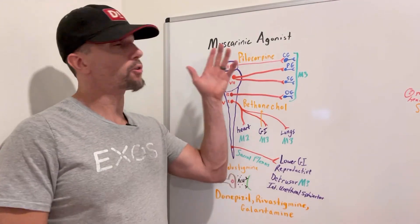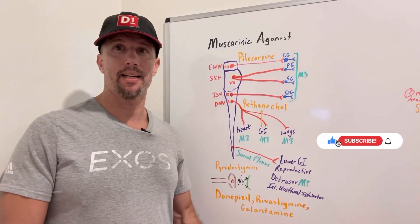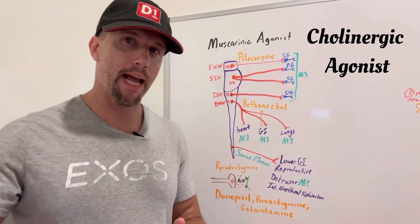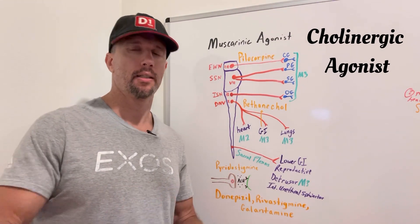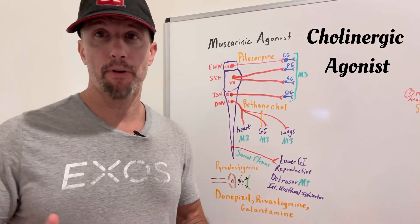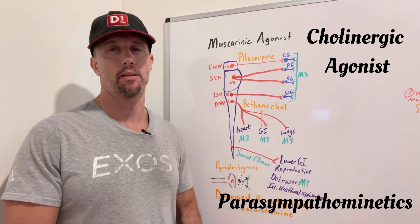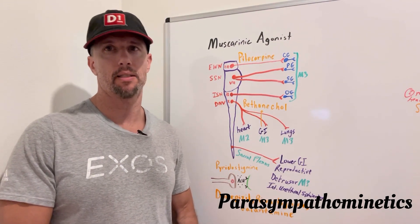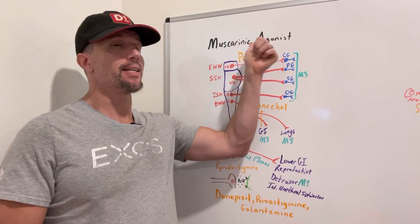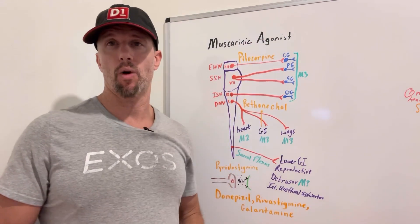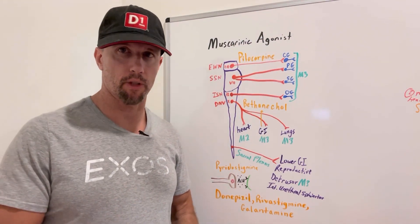In this video we're going to talk about muscarinic agonists. You can also call them cholinergic agonists because they release acetylcholine, or parasympathomimetics because they mimic what the parasympathetic nervous system does. In our last video we talked about muscarinic antagonists, so go ahead and watch that too to get a feel for all the muscarinic drugs.